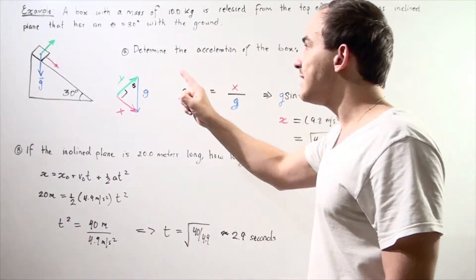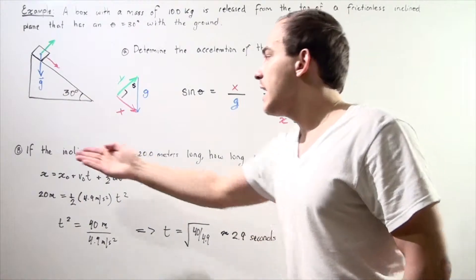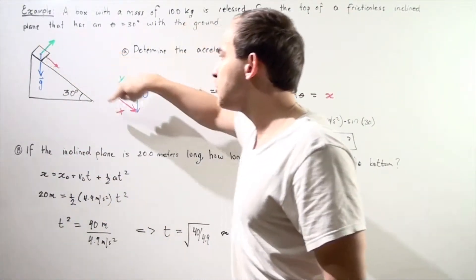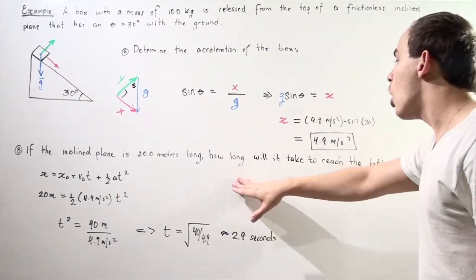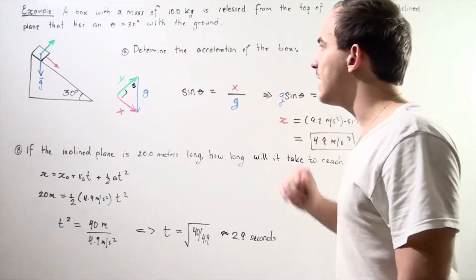Now we want to find A, the acceleration of the box, and B, if the inclined plane is 20 meters long, if the hypotenuse of the inclined plane is 20 meters long, how long will it take to reach the bottom? So let's begin with part A.